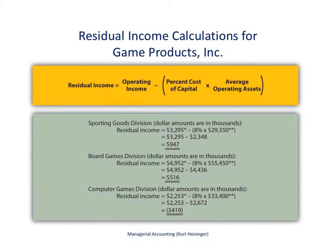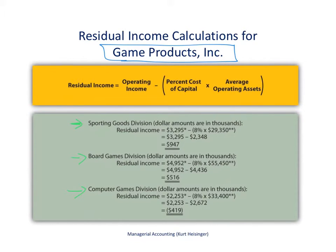I've been using this same company for all of the examples of how to evaluate an investment center, so you'll see the exact same dollar amounts and numbers — they all tie together. The company is called Game Products Incorporated, and it has three different divisions: the sporting goods division, the board games division, and the computer games division. We're going to calculate the residual income for each of these divisions.